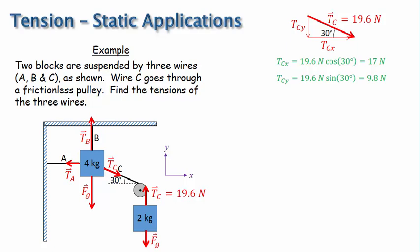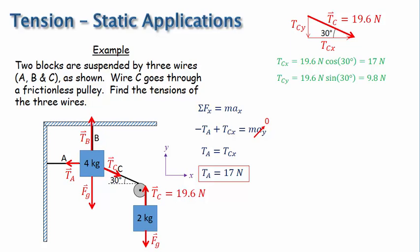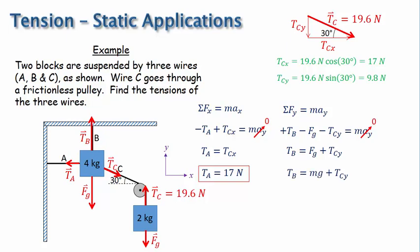Now we can apply Newton's second law to the x and y directions. In the x direction, there are two forces: tension A in the negative x direction, and the x component of tension C in the positive x direction. With acceleration equal to zero, tension A equals the x component of tension C, so tension A is 17 newtons. In the y direction, there are three forces: tension B in the positive y direction, and the gravitational force and the y component of tension C both in the negative y direction. Again, with acceleration equal to zero, we solve for tension B. The gravitational force is mg, and plugging in values, tension B comes out to be 49 newtons.